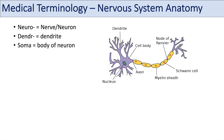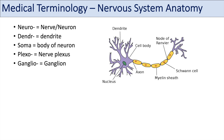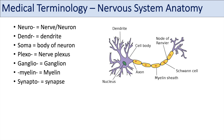Another term is soma, which is the body of the neuron. The term plexo refers to the nerve plexus. The prefix ganglio means ganglion. The prefix or suffix myelin refers to the myelin sheath, the fatty layer that insulates the axon of a neuron — you can think of demyelination. Synapto means synapse, relating to the point where one neuron makes contact with another neuron.